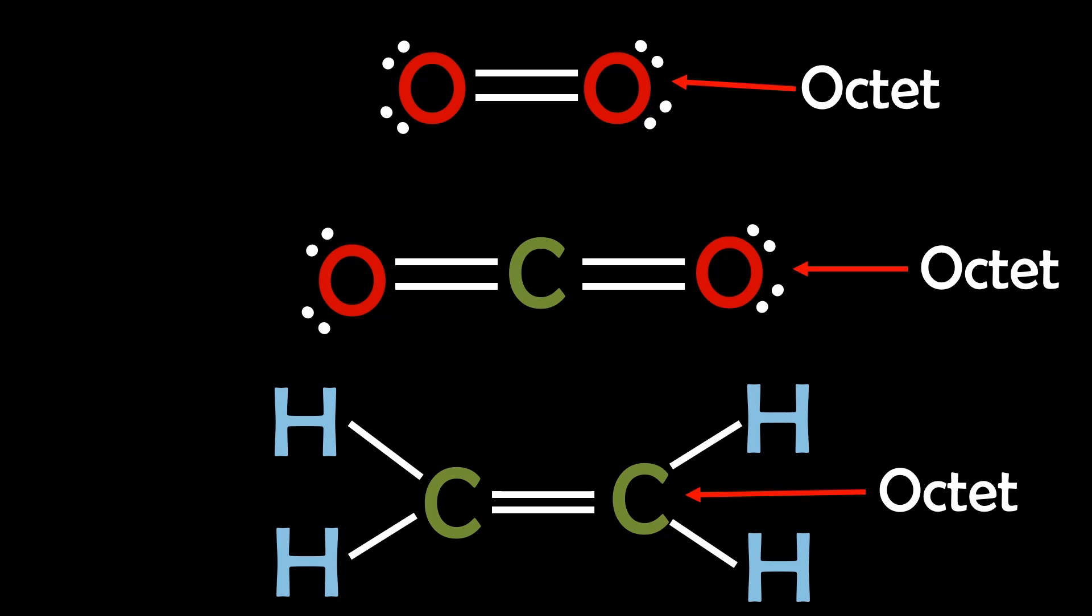So, to summarize, the octet rule is a guiding principle in chemistry that explains the bonding behavior of atoms that can have a valence shell configuration of ns2 and np6.